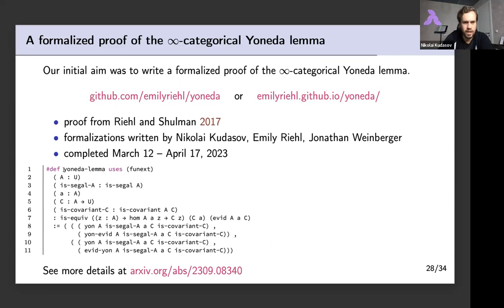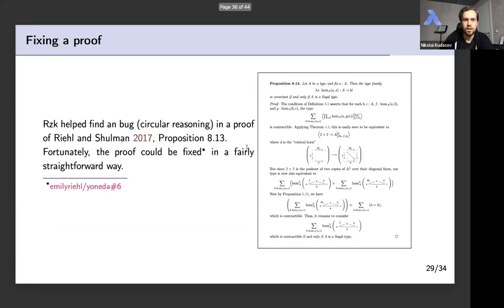This is the statement of the Yoneda Lemma, actually stated for pre-infinity categories — it works there. It also mentions something about covariant type families. The proof assistant was of some use: it helped find a small bug concerning circular reasoning in one of the propositions. The proof worked in one direction, but in the other direction a different proof should have been used.